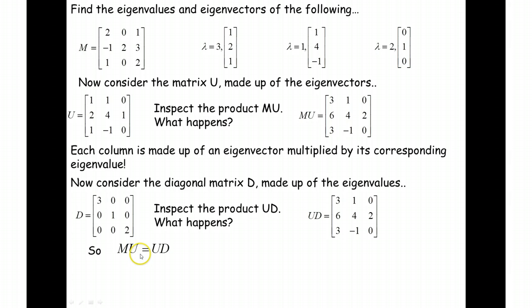then I would need to multiply both sides of this by the inverse of U, which would then give me M is equal to U times D times by the inverse of U.